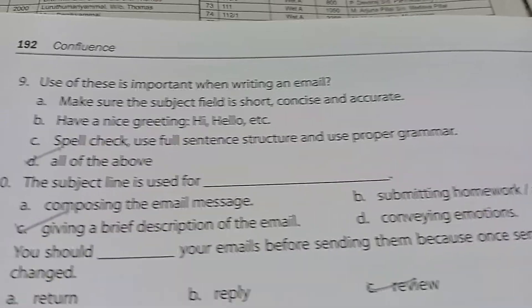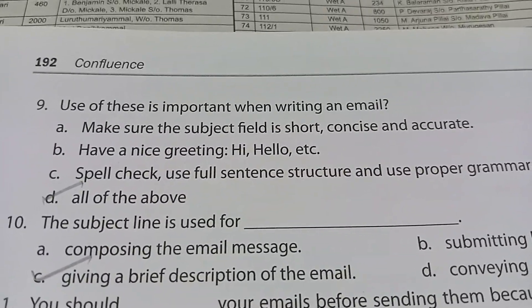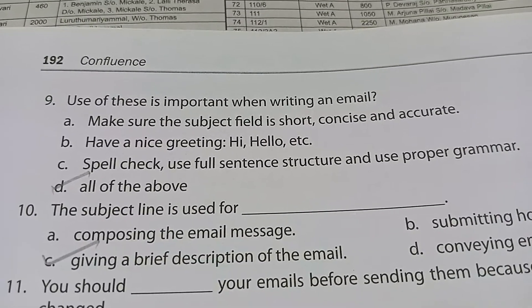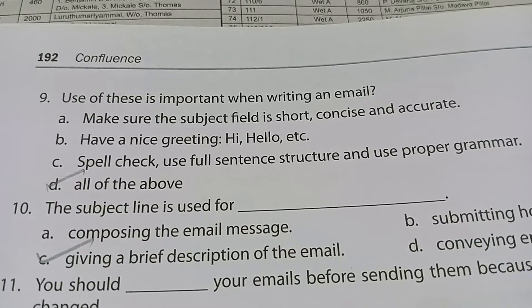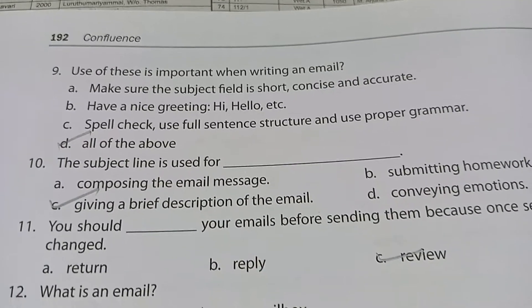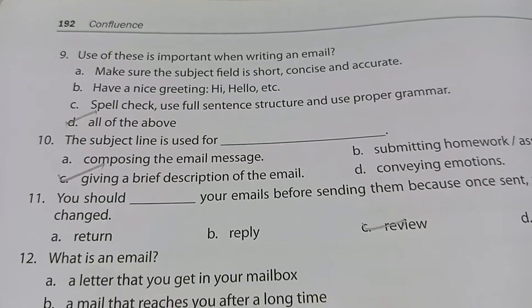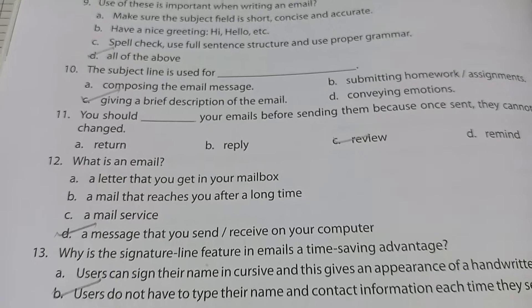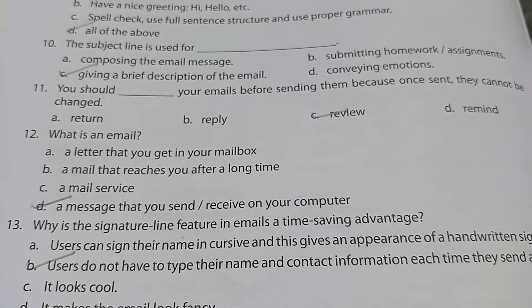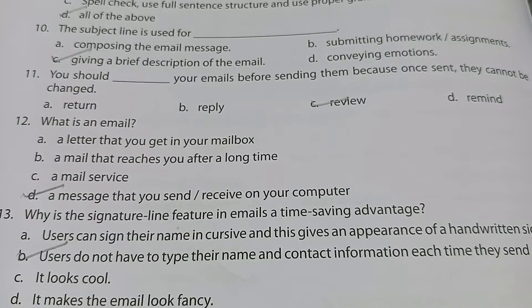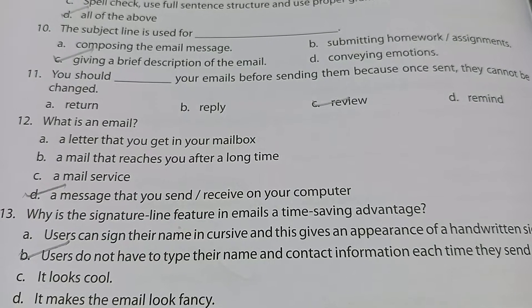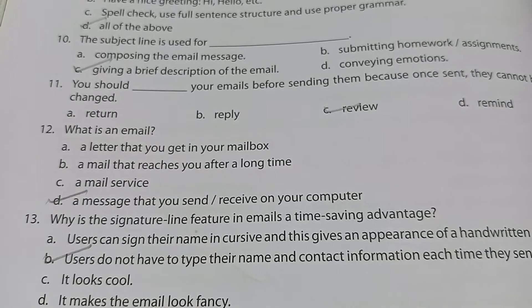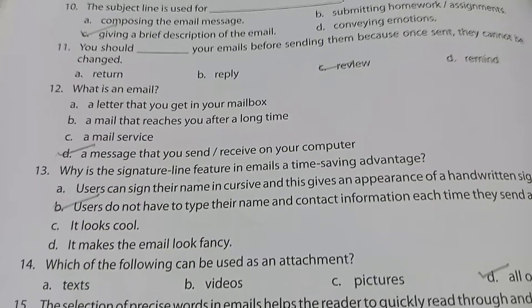Moving to the next page: the first answer is all of the above. The subject line is used for giving a brief description of the email. An email is a message that you send and receive on your computer. The signature line feature in emails is a time-saving advantage because users do not have to type their name each time.